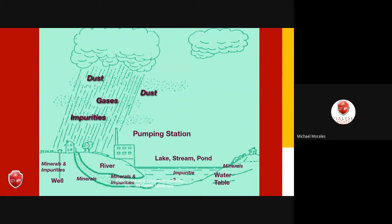When rain falls, it lands in rivers, lakes, and ponds, or on the earth hitting plants and trees. Depending on where it falls, it becomes compartmentalized. If it falls on the ground, it may be absorbed by plants through osmosis, or it may seep through the ground, work through the elements of the earth, pick up mineral impurities, and end up in a well or spring.